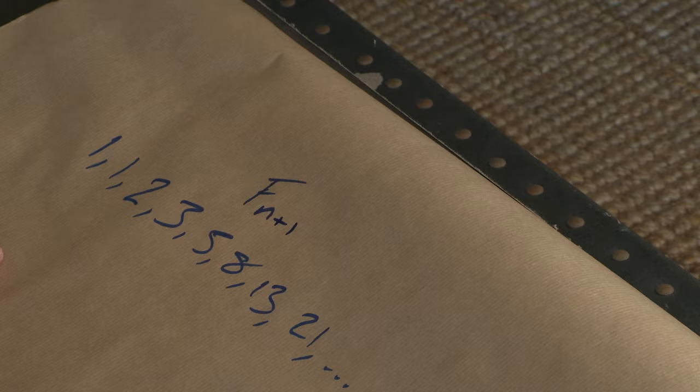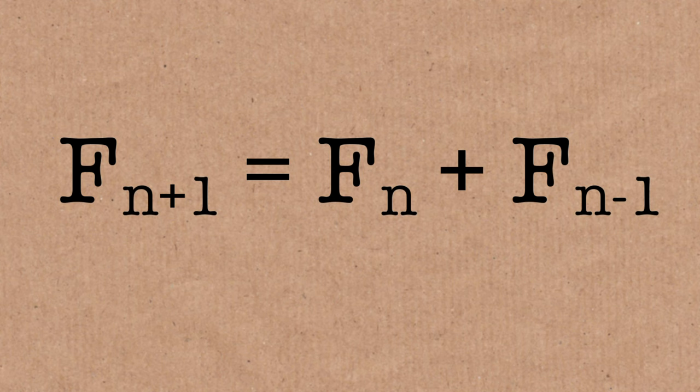If you want to write that down as a little formula, you'd write it like this. If you want to find the next Fibonacci number, you just add the previous two. A couple of well-known facts about Fibonacci numbers as well.